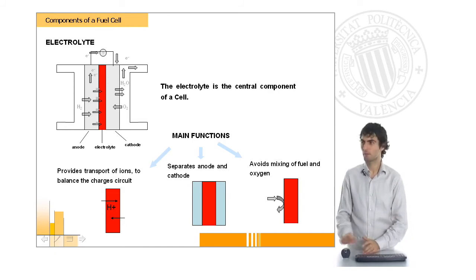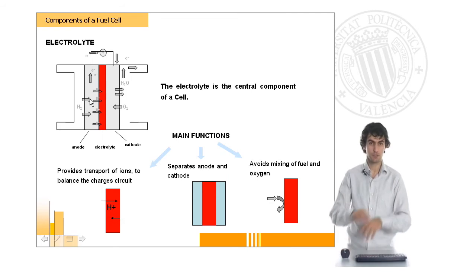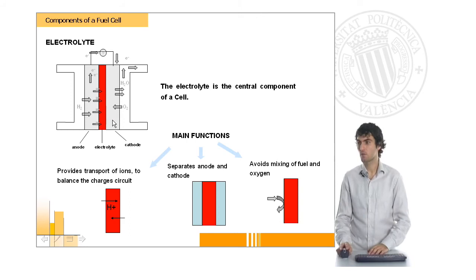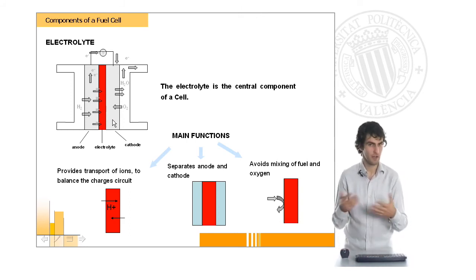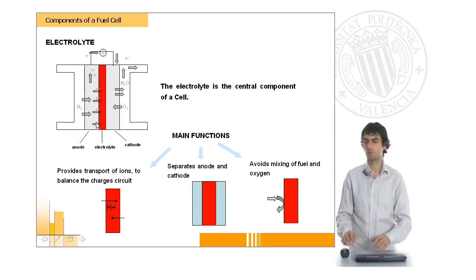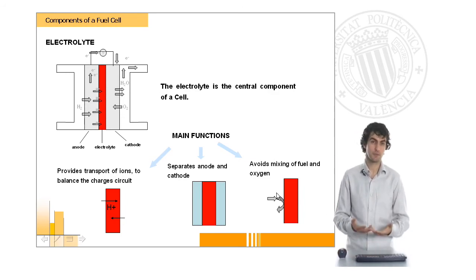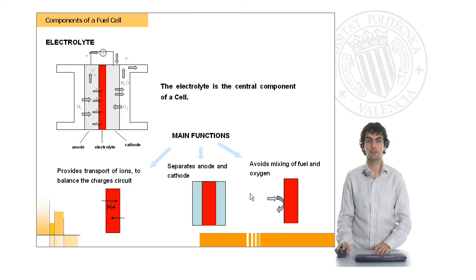But it's not the only one because in order to have a mass balance in this whole reaction, we will need protons to be transferred from the anode to the cathode or other ions, not necessarily protons, and we will ask electrolyte as well to separate the two gases which are going to be the reactants, basically oxygen and hydrogen.